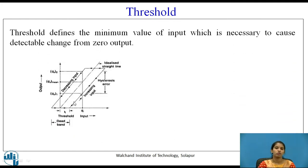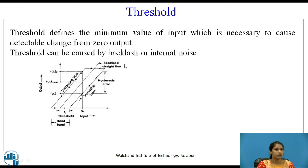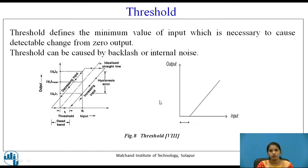Threshold defines the minimum value of input which is necessary to cause a detectable change from zero output. Threshold can be caused by backlash or internal noise. The figures show the threshold region where detectable change is caused from zero input. In most digital systems, when power is supplied, it needs to reflect on the recorder or display system.